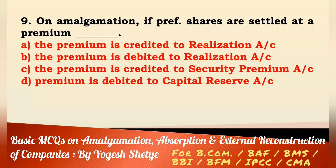Question 9: On amalgamation, if preferences are settled at a premium — the premium is credited to Realization account, debited to Realization account, credited to Securities Premium account, or credited to Capital Reserve account? Answer: The premium is credited to Realization account. Answer A.